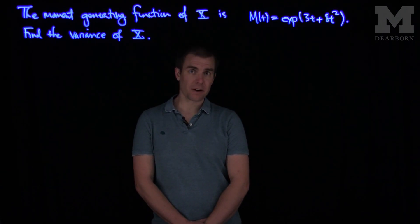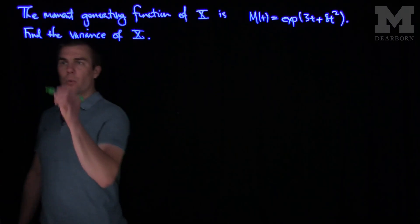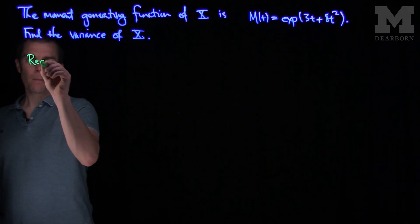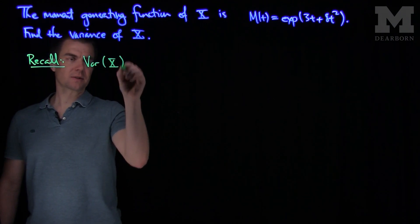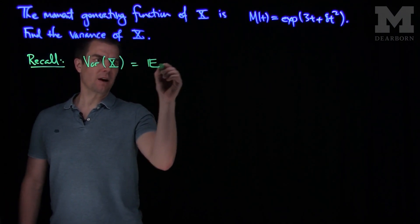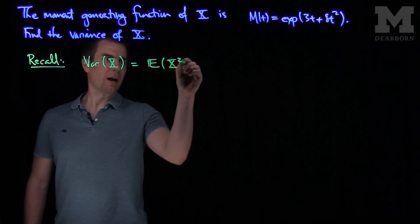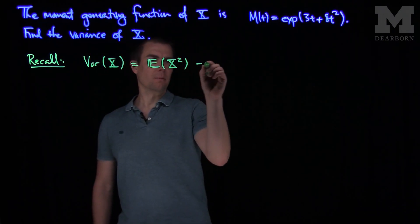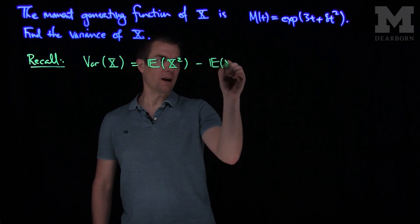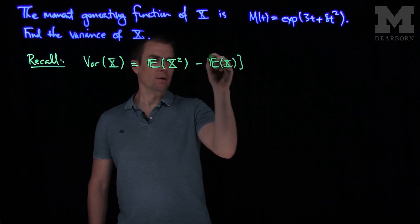We're asked to find the variance of X. So we recall that the variance of X is the expected value of X squared, the second moment of X, minus the expected value of X quantity squared.